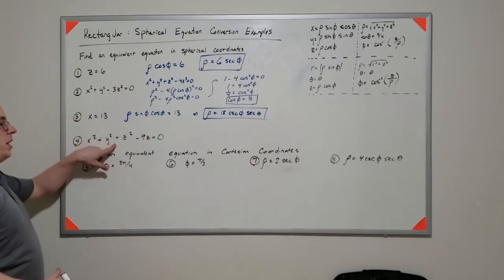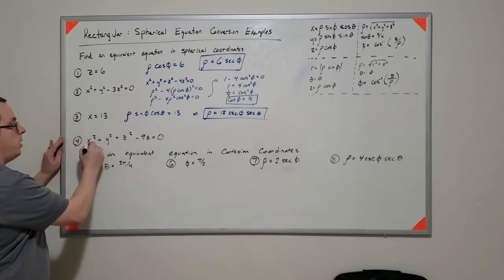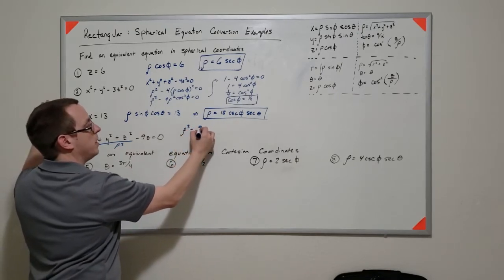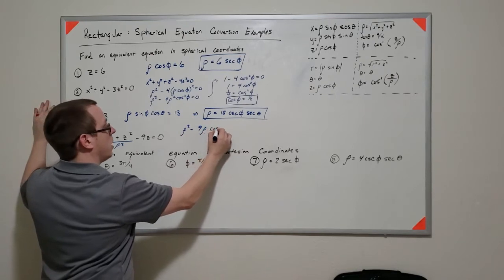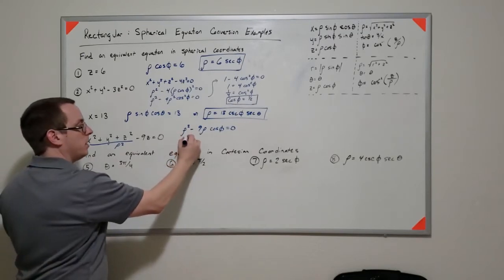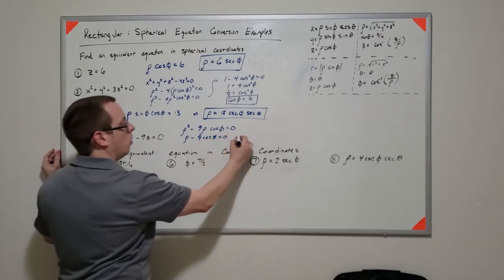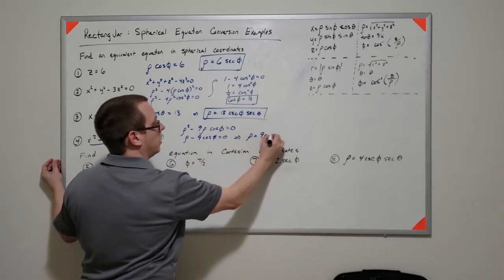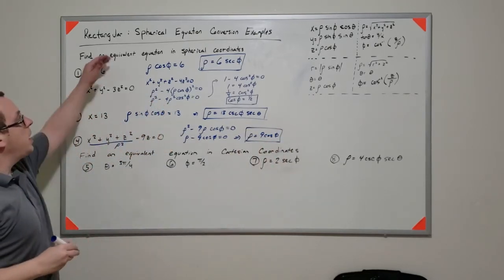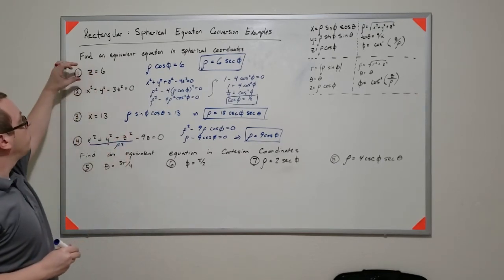Finally, this next equation is very similar to the previous one. We can say that x² + y² + z² is ρ², so we write ρ² − 9ρ cosine φ = 0. We can cancel out one factor of ρ — not both — giving ρ − 9 cosine φ = 0, which is ρ equals 9 cosine φ. And that's how you convert from Cartesian to spherical — or rather, how you convert Cartesian to spherical.